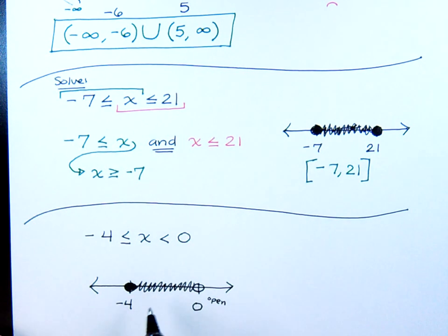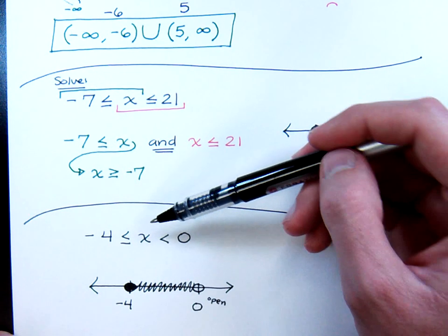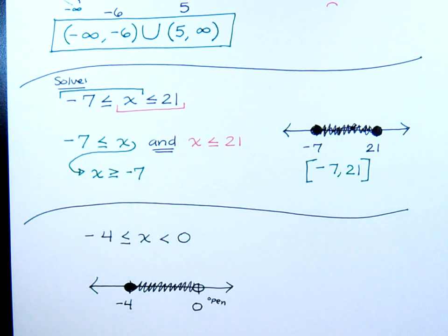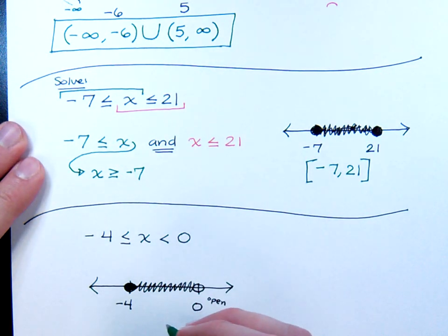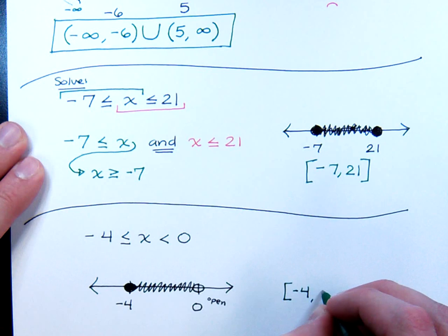So as long as x is in the middle here for these compound inequalities, there's not much else that you need to do. Graph. And then from the graph, we want to write our interval notation, which is going to be from negative four to zero. Open with a bracket. Close with parentheses.